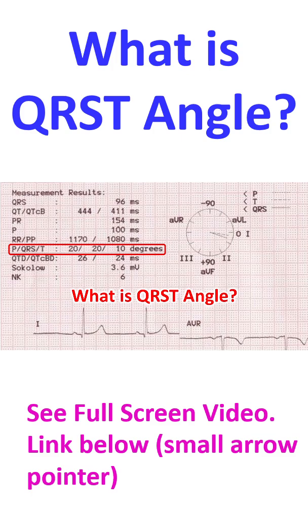Many modern computerized electrocardiograms display a clock face showing the vectors of P, QRS, and T waves. In the illustration, P and QRS vectors are at 20 degrees and the T vector is at 10 degrees. That is why P and QRS vectors are superimposed on each other. The QRST angle is 10 degrees in this normal ECG.